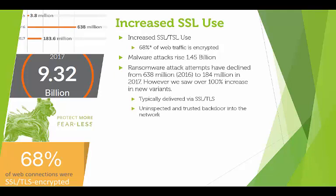Ransomware attempts — this I find fairly interesting. The attempts have actually dropped, but the variants have increased over 100%, meaning there are over 100% more new ransomware types out there. Although it sounds good that the attempts have dropped, they're becoming more sophisticated in their targeting. And since ransomware is typically delivered via SSL, and most of the time that's not being inspected, it's kind of considered a trusted backdoor into your network.